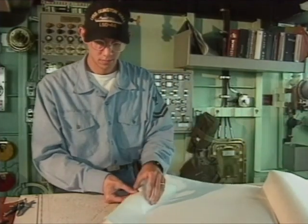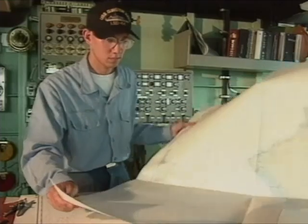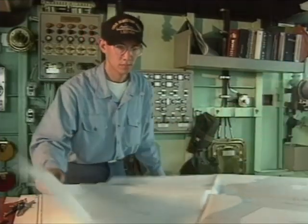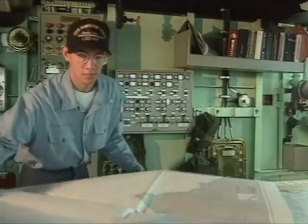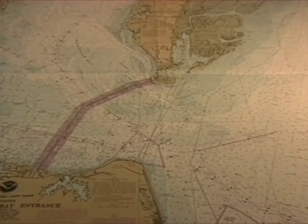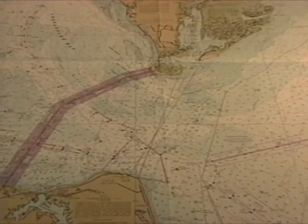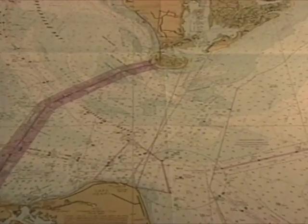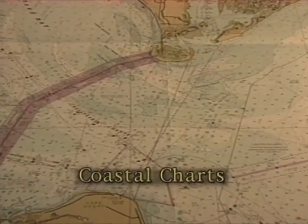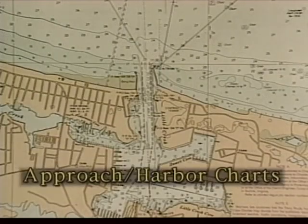Navigational charts contain a wealth of useful information for boat coxswains as well as navigators. Individuals acting as navigators or boat coxswains may use one of three types of charts: coastal charts, sailing charts, and approach harbor charts.